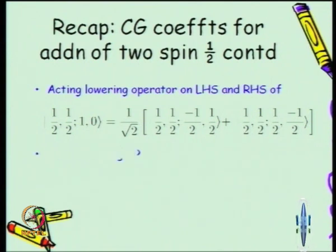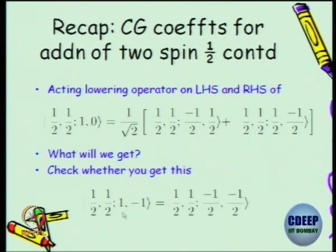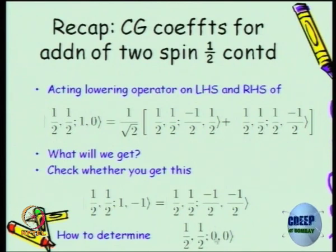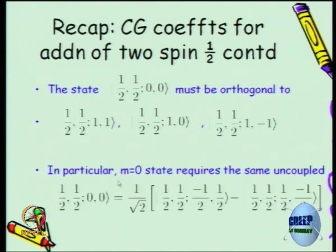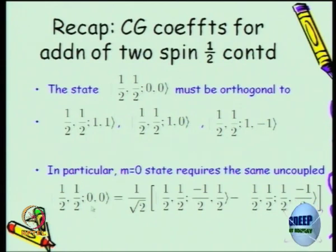We also went on to say how to find the one more state we have to worry about — the 1, minus-1 state — which you can get by the lowering operation, and you can show it equals this with coefficient 1. To determine the coupled state with total angular momentum 0 and magnetic quantum number 0, this state has to be orthogonal to the other state, and using that you can fix the coefficient with the relative sign. Those three states correspond to spin J in the coupled state, and the M equal to 0 state is a linear combination with negative signs. Please redo this for J equal to 1 and J equal to half.